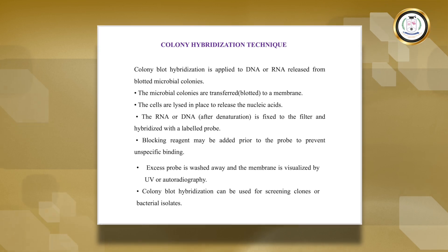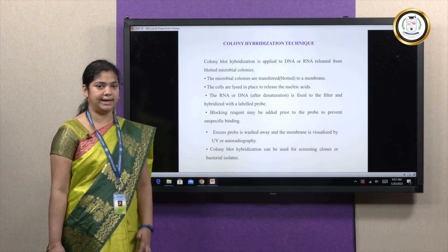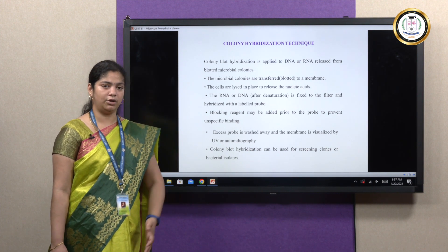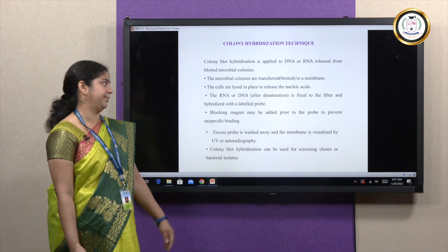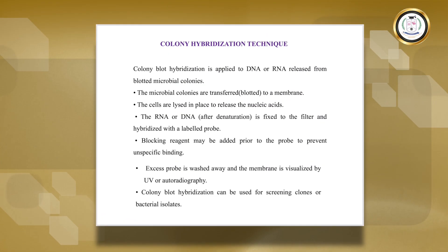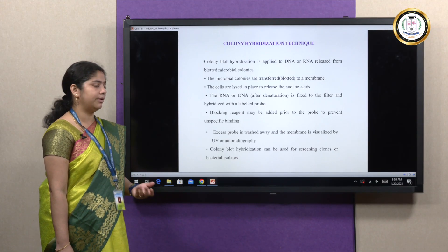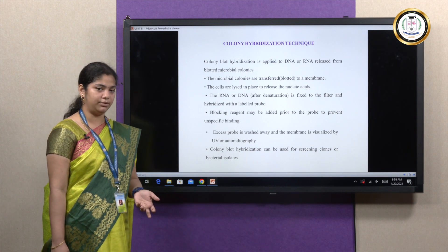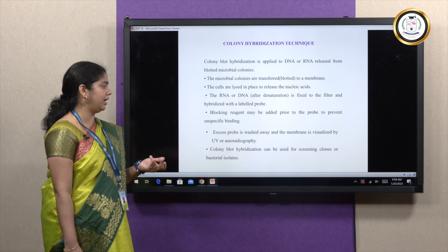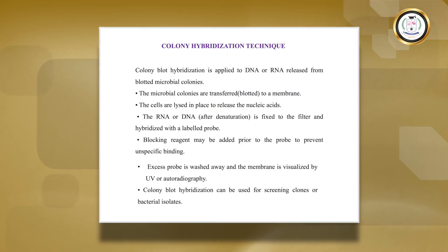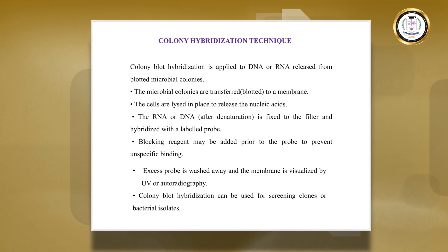Another method is colony hybridization, where hybridization refers to binding of a complementary DNA sequence — a template binds to the complementary gene sequence — and this is used to identify a target gene. The cloned cells are transferred to a membrane, lysed, and the DNA/RNA released is probed with an antibody or complementary DNA sequence. Once bound, visualization is performed using UV or autoradiography.